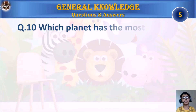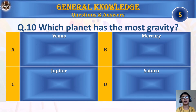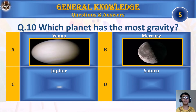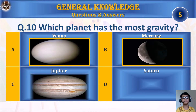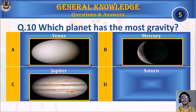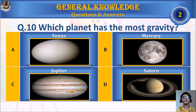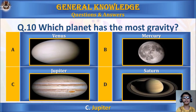Question 10: Which planet has the most gravity? A. Venus, B. Mercury, C. Jupiter, or D. Saturn. Your time starts. The answer is C. Jupiter.